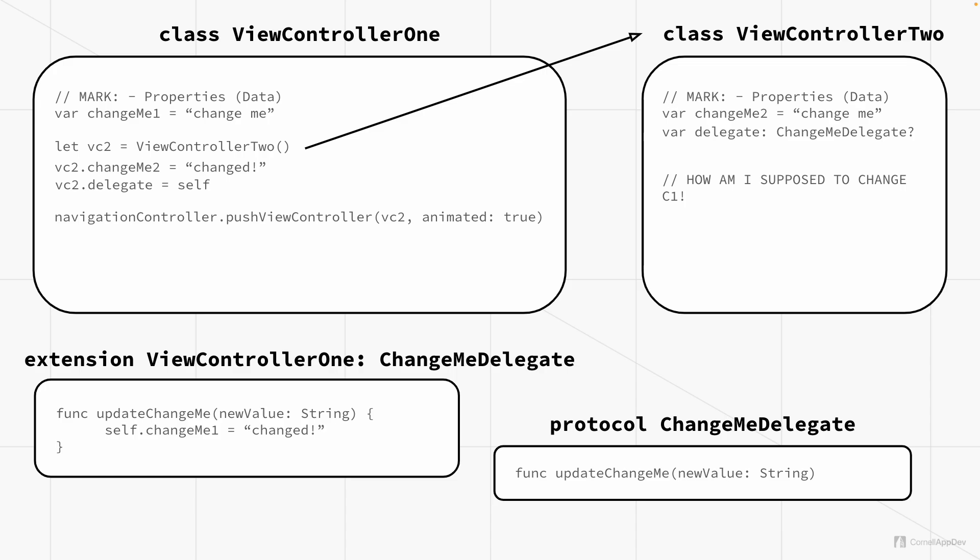Now that we've set the delegate equal to self, we still need to know how to change changeMe1 from view controller two. You basically just call the delegate — and remember the delegate is a changeMeDelegate, so we know it has the function on it. You say delegate.updateChangeMe, and then put in the new value.